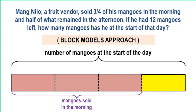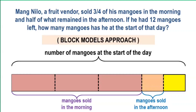Next clue: one-half of the remaining mangoes were sold in the afternoon. So what we do is divide the remaining part into two equal parts. We label the first half as the mangoes sold in the afternoon. The remaining part represents the mangoes left after that day.